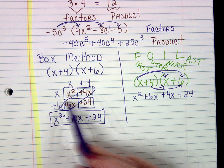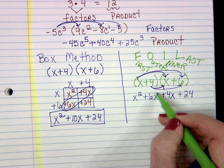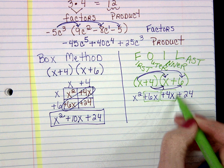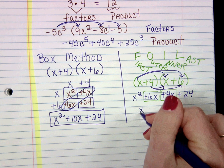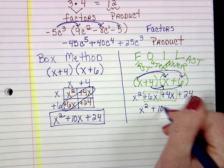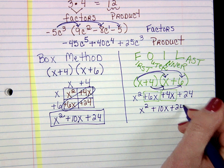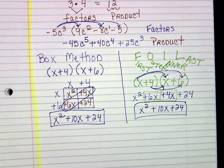Now just like we did in the box method, we're going to look for our like terms, which in this case they're right here. So it would be x squared plus 10x plus 24. Same product, same result, just went about it a tiny bit differently.